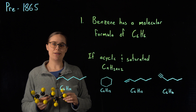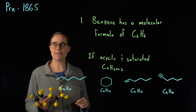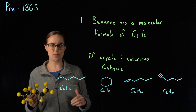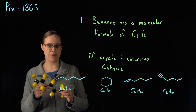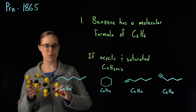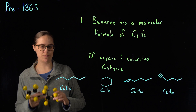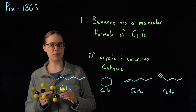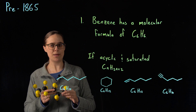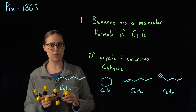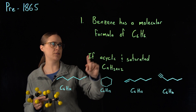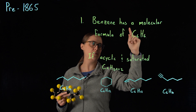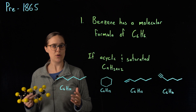Let's go back in time to just before the year 1865. The United States is in turmoil, so let's hop across the pond to my ancestral homeland of Europe for purposes of this story. I want to start by telling you the things that chemists knew about benzene at this point in time. First, benzene has a molecular formula of C6H6.